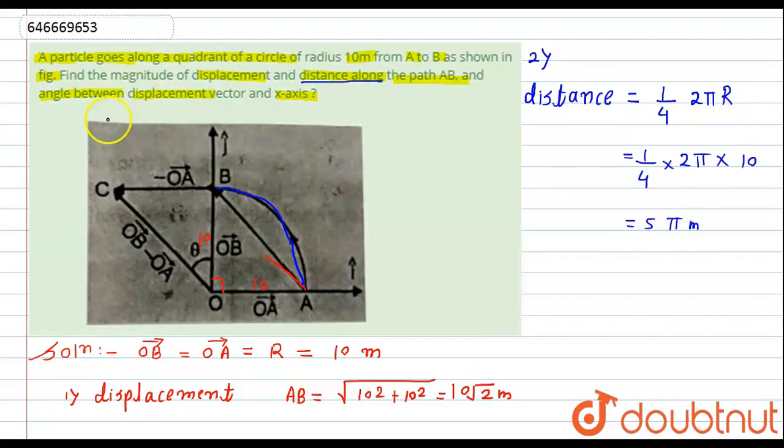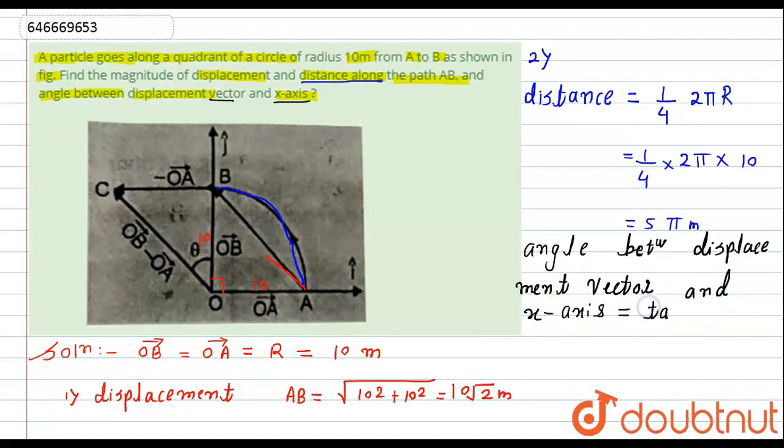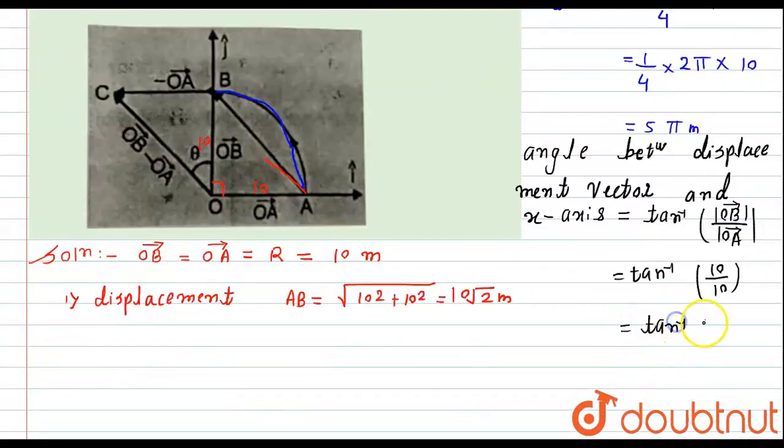Now the third thing which we have to find here is the angle between displacement vector and x-axis. If you look to the figure, OA is 10, OB is also 10. So here the angle between displacement vector and x-axis will be equals to tan inverse of modulus of OB vector divided by modulus of OA vector. This will become tan inverse of 10 by 10, that means tan inverse of 1. So this will be equals to 45 degrees. The angle between them will be 45 degrees.